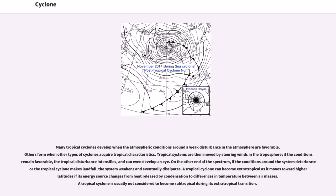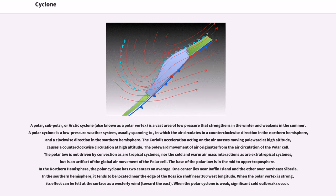A polar, subpolar, or Arctic cyclone, also known as a polar vortex, is a vast area of low pressure that strengthens in the winter and weakens in the summer. It is a low-pressure weather system in which air circulates counterclockwise in the northern hemisphere and clockwise in the southern hemisphere. The Coriolis acceleration acting on air masses moving poleward at high altitude causes a counterclockwise circulation at high altitude. The polar low is not driven by convection as tropical cyclones are, nor by cold and warm air mass interactions as extratropical cyclones are, but is an artifact of the global air movement of the polar cell. In the northern hemisphere, the polar cyclone has two centers on average: one near Baffin Island and the other over northeast Siberia. In the southern hemisphere, it tends to be located near the edge of the Ross Ice Shelf near 160° west longitude.